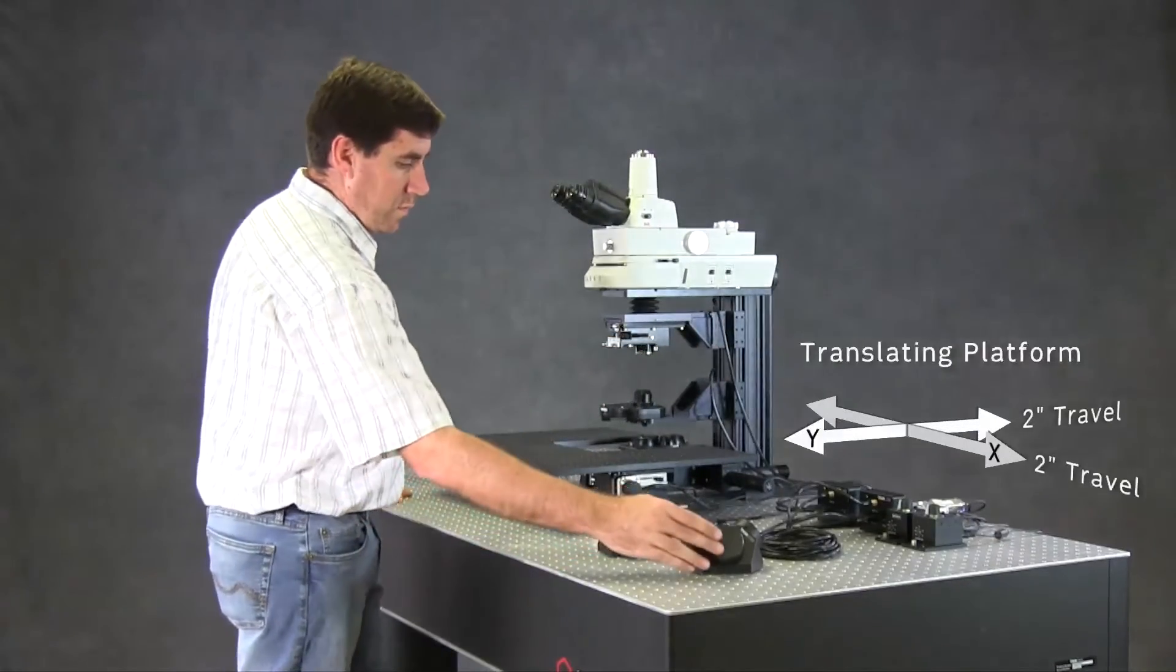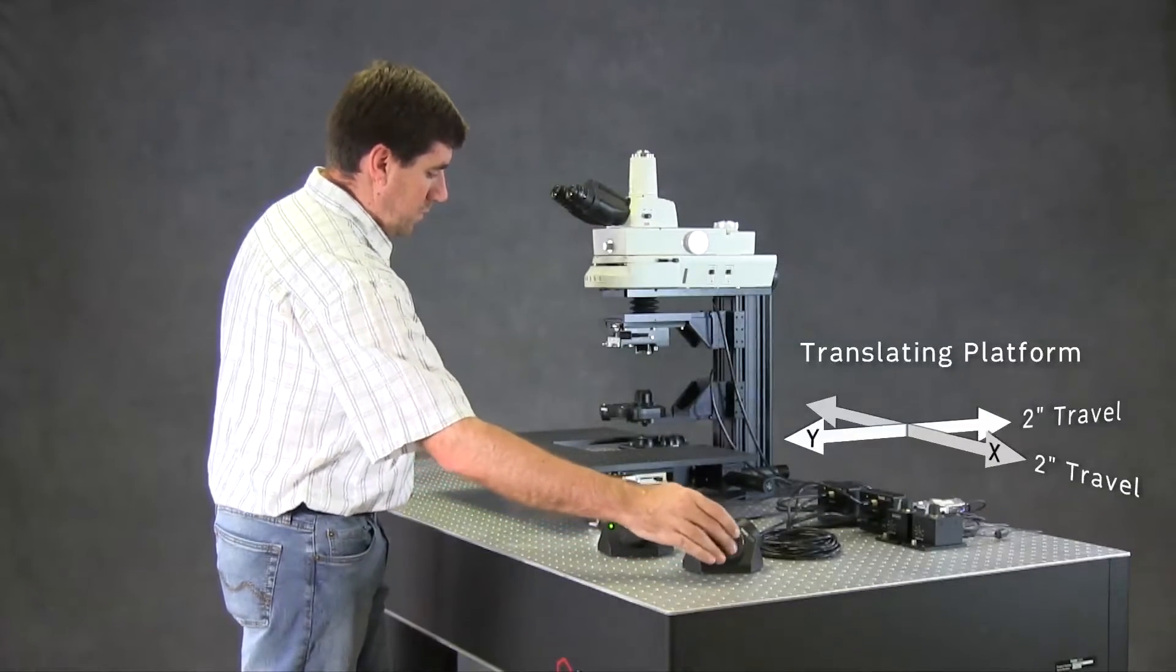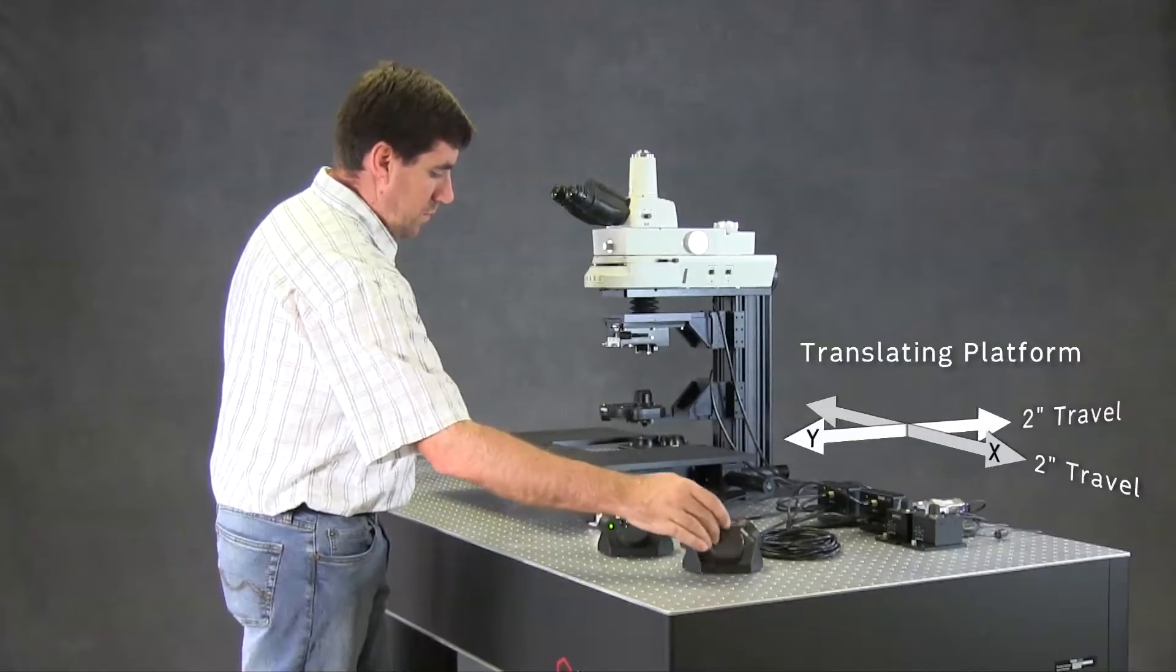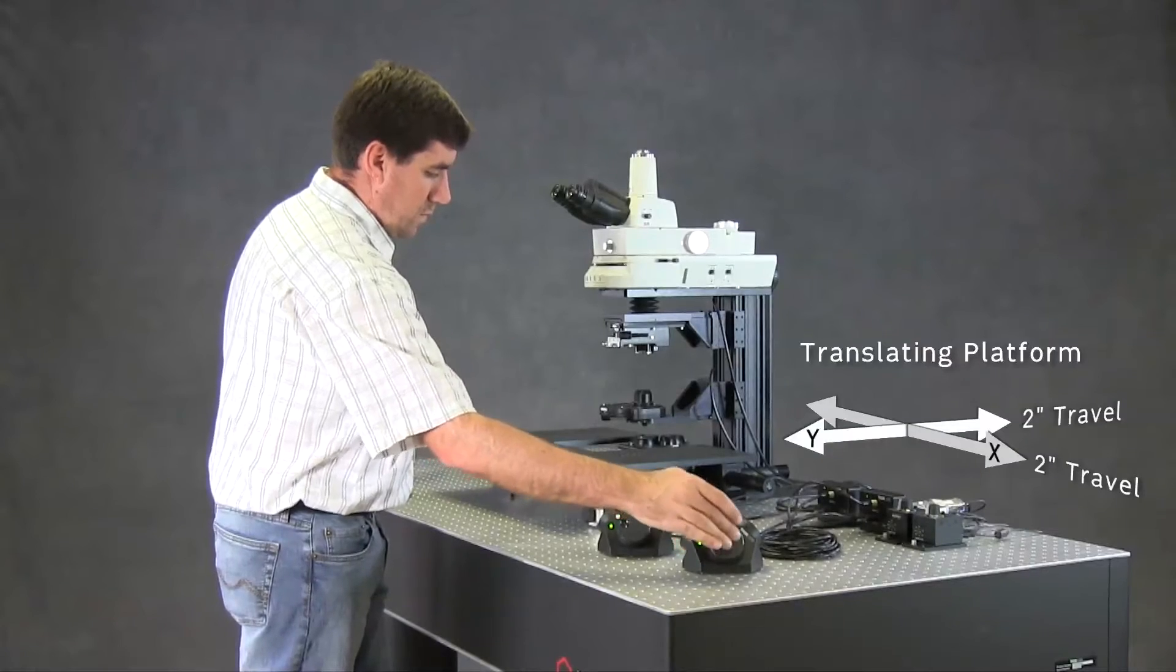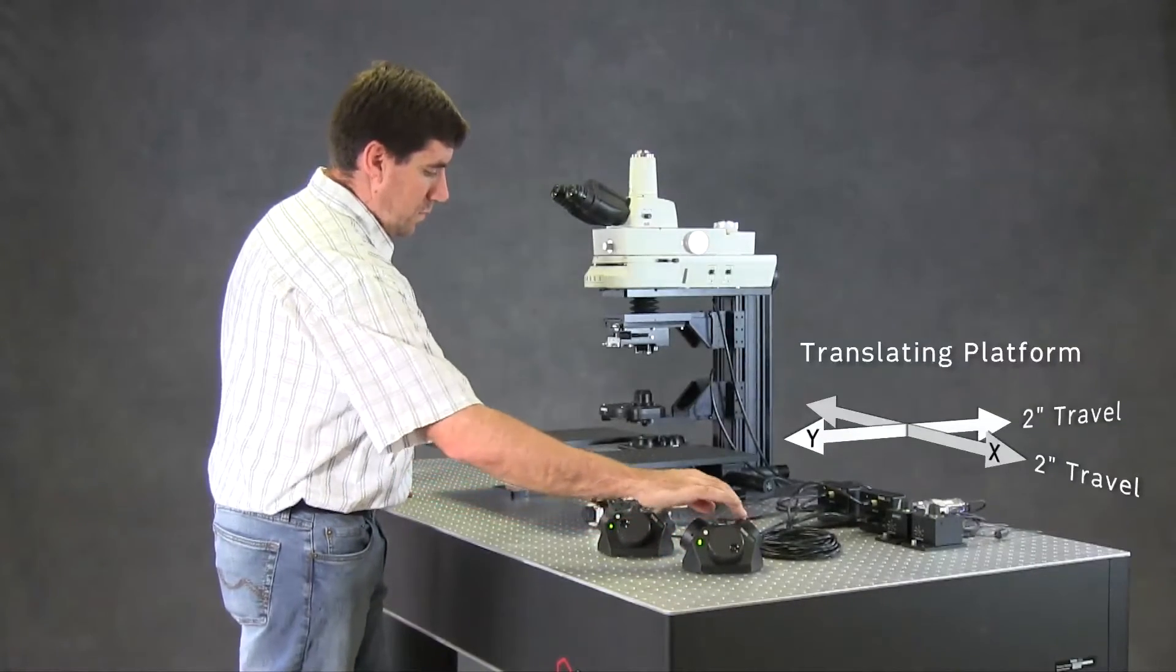The translating platform provides 270 degree access to the optical path and contains tapped holes for mounting equipment. The travel range in both X and Y is 2 inches.